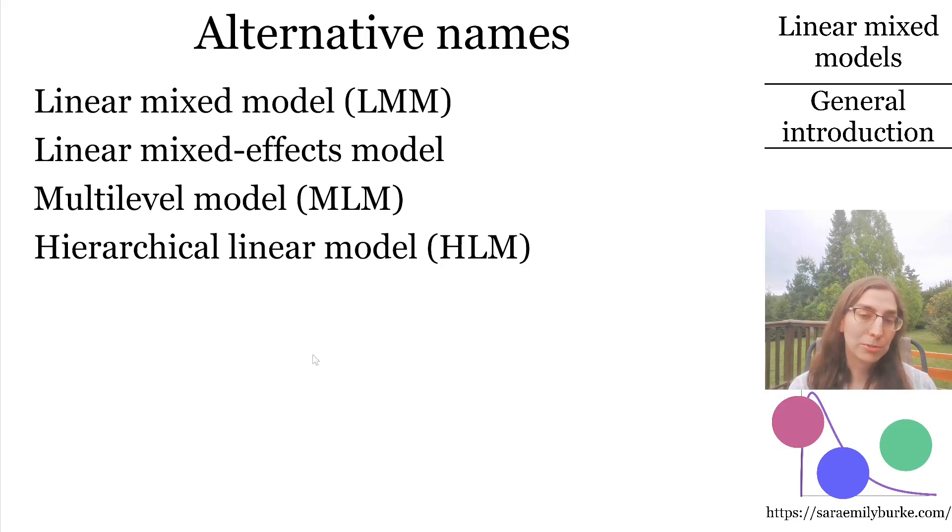These are just different terms for the same thing. A quick aside, the last term, hierarchical linear model, is potentially confusing, because it sounds a lot like hierarchical linear regression, which is just a fancy name for comparing ordinary regression models with more and fewer predictors. That is, if you have a regression model with two predictors, and you want to compare it to another regression model that has the same two predictors plus an additional predictor for a total of three, you might call this whole process hierarchical regression.